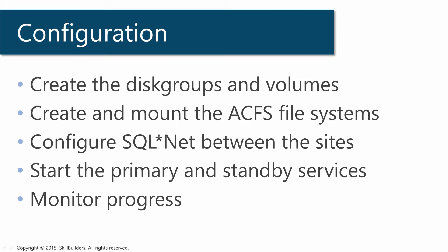In terms of the configuration steps, I've completed the first two: I've created my disk groups and my volumes, and I've created and mounted the ACFS file systems. The third step is to configure network connectivity between the sites. In this demonstration I don't need to do that because I'm replicating between two file systems both attached to the same machine, so I can proceed straight to starting the primary and standby services that will transmit and receive the changes.